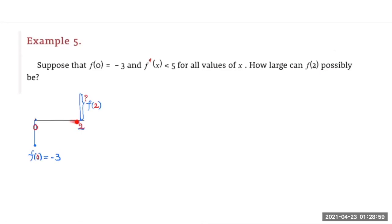So here is the x-axis. f(0) = -3 and f'(x) ≤ 5 for all x. We want to know how large this f(2) possibly can be. Think about 0 and 2 as the two endpoints of a closed interval. We know the function value at this end and we want to know the function value at the other end. We also know the derivative of the function.